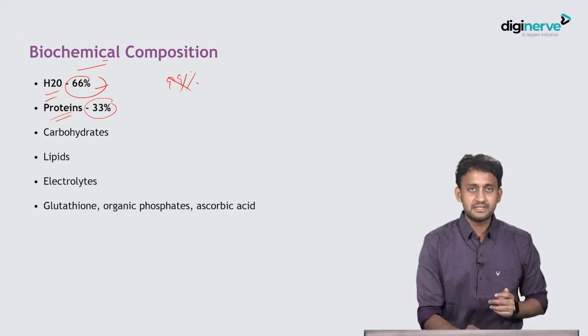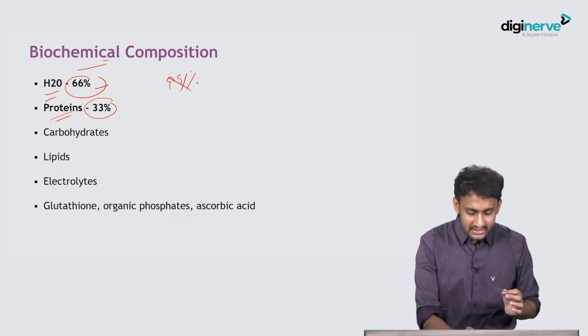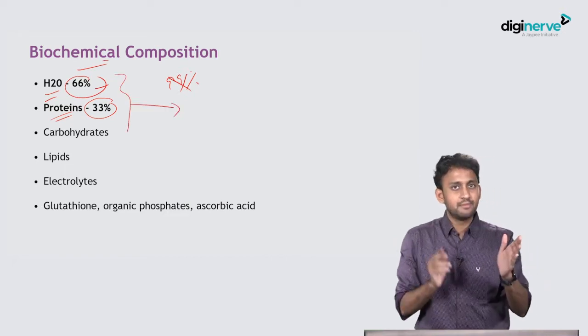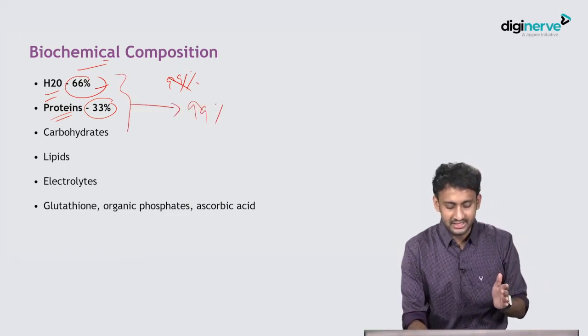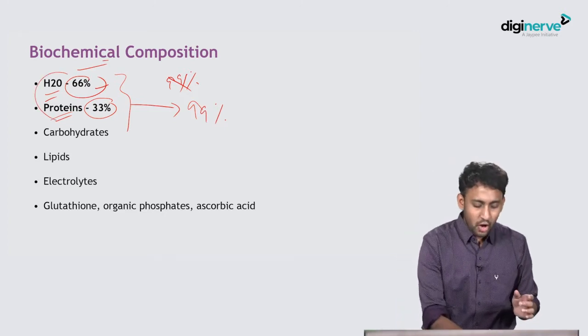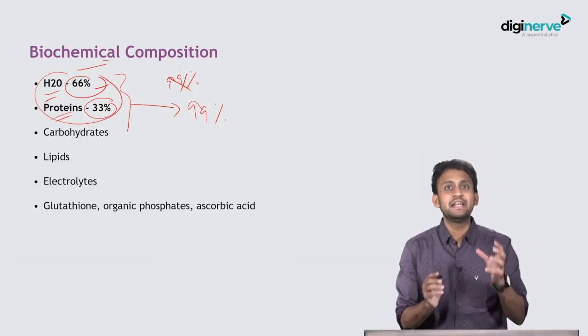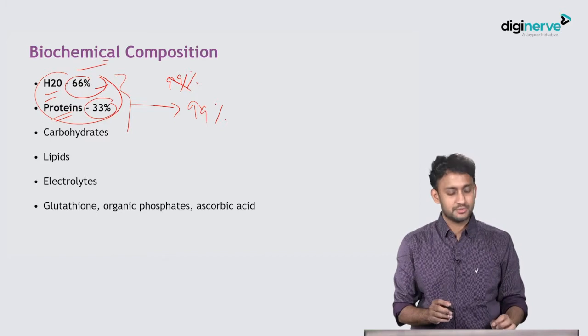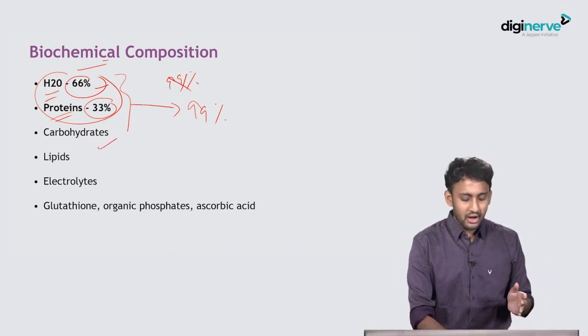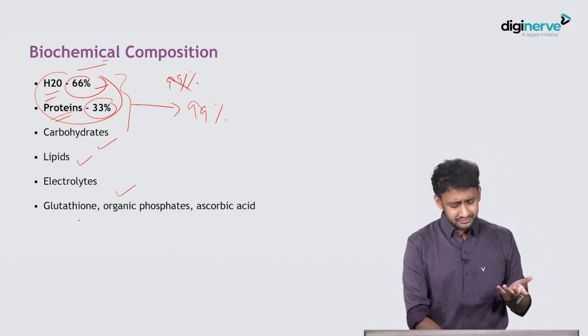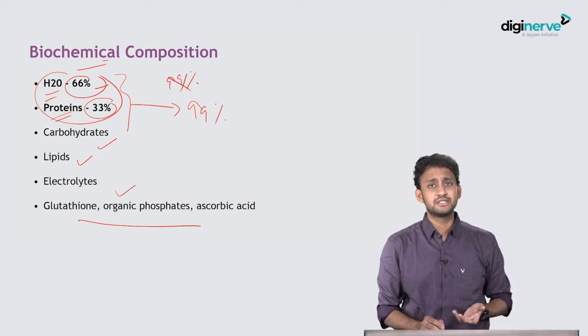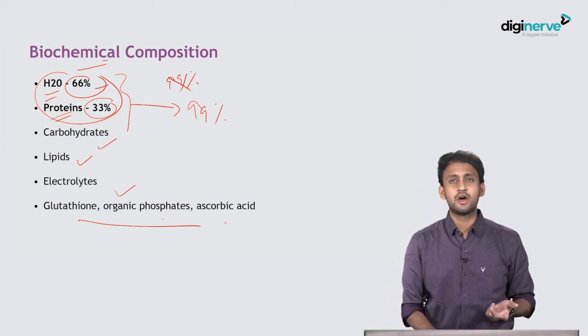Protein is 33 percent. Together water and proteins form 99 percent. The most predominant ingredients are water and proteins. Apart from that you have carbohydrates, lipids, electrolytes, and other compounds such as glutathione, organic phosphorus, and ascorbic acid.